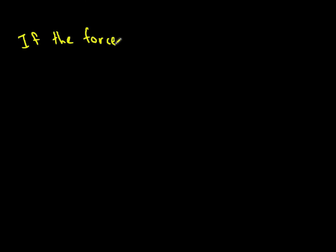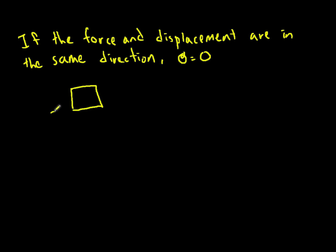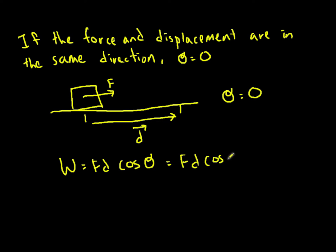If the force and displacement are in the same direction, that is to say, the object goes in the exact direction that it's pushed, then the angle between them is 0. When this happens, for example, we have an object being pushed with a force, and it travels a distance in the same direction as that force, and theta is 0. We get work equals force times distance times cos theta, which is fd cos 0, and cosine of 0 equals 1. This makes it easier. We just have work equals force times distance in this situation.